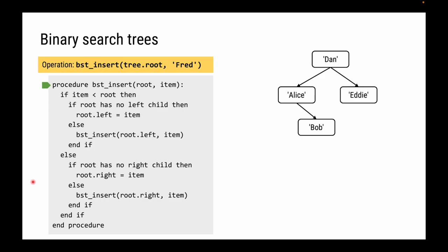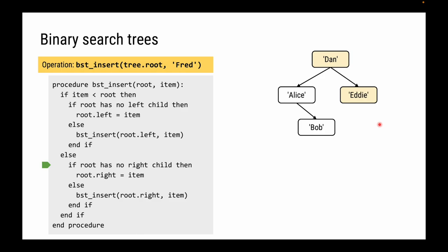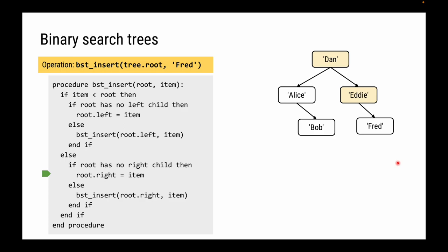Let's insert Fred. Instinctively, Fred is bigger than Dan so it goes on the right — the right is occupied by Eddie. Fred is bigger than Eddie, so Fred should appear as a right child of Eddie. Checking the algorithm: we start with Dan, Fred is not less than Dan, so it goes right. The right is occupied, so we recursively call again on Eddie. Eddie doesn't have a right child, so we can insert Fred there.